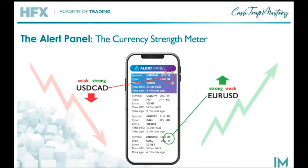The currency strength meter is a numeric measure of the strength of each individual currency. When we compare the two, we can get an idea for overall trend direction. For example, the US dollar to Canadian dollar is currently said to be in a downtrend. This is because the US dollar is currently measured at 14 and the Canadian dollar is measured at 38. Because the US dollar is the first currency listed in the pair and it is a smaller number than the Canadian dollar, it is said to be weaker. So if the first currency in the pair is weaker, price is said to be in a downtrend situation.